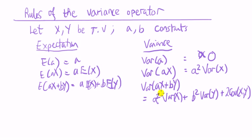Now, in many introductory stats textbooks, you will see that they will say that let x and y be independent, and then this third term, the covariance, disappears.